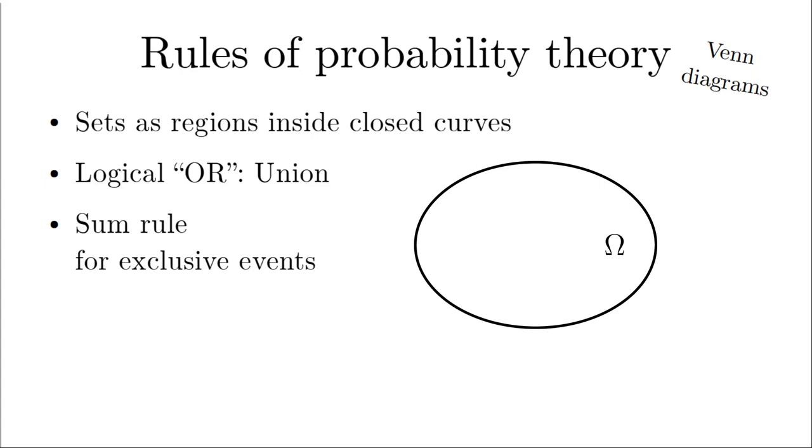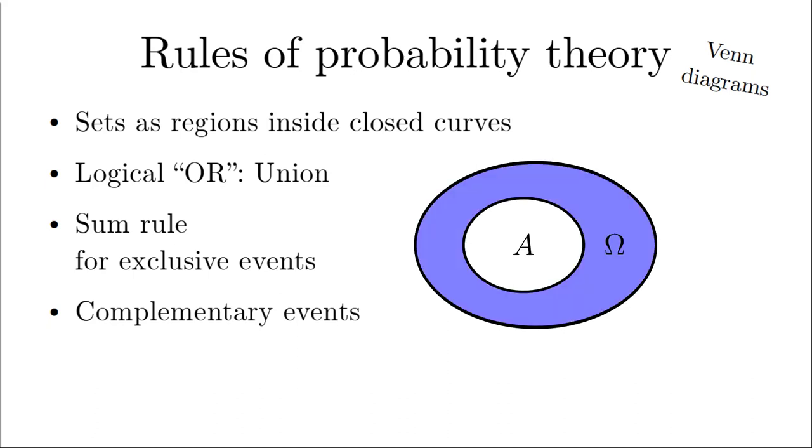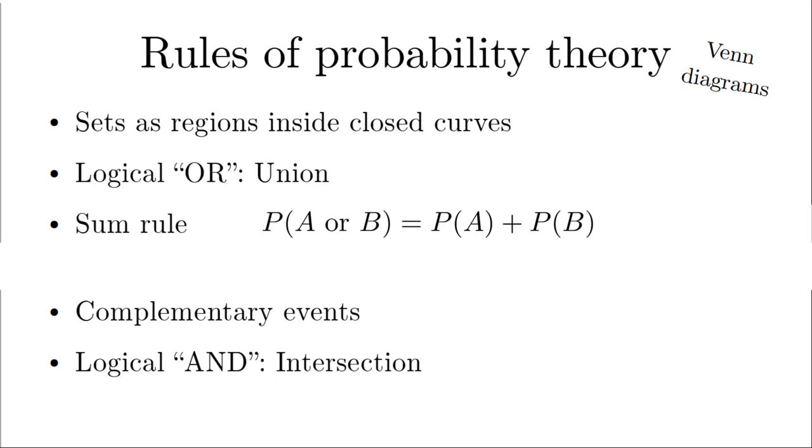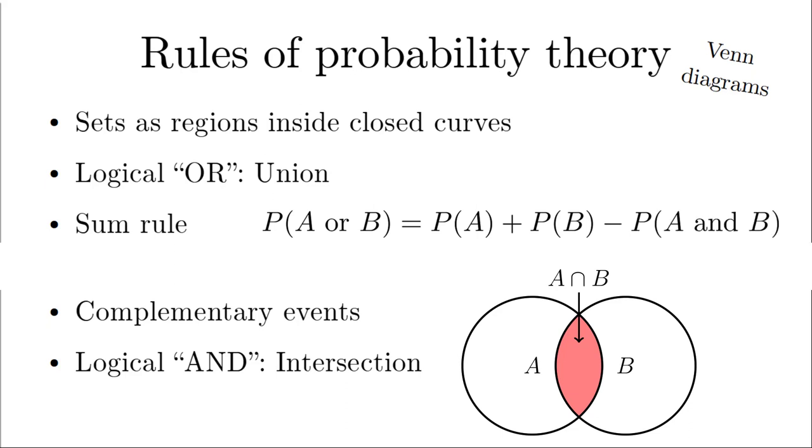A special case applies to the complement of the set A or the corresponding event and can be depicted as the area inside omega that is not A. In this case, the sample space omega contains both A and not A. Remember that we have defined the probability of the sample space omega to be equal to 1. Therefore, we get for the probability of the complement of an event 1 minus the probability of that event. For non-exclusive events, there might be an overlap which corresponds to the intersection of two sets. If we sum the probabilities for the events A and B, we count the elements contained in the intersection of the sets A and B twice. Therefore, we have to subtract the probability for the event A and B. That brings us to the generally valid form of the sum rule.